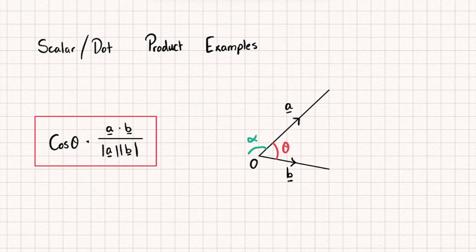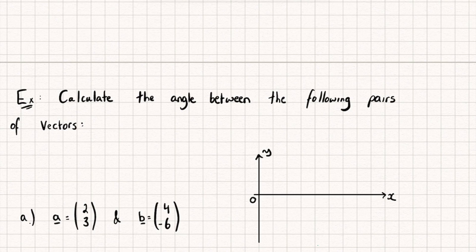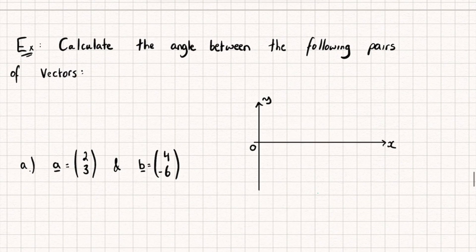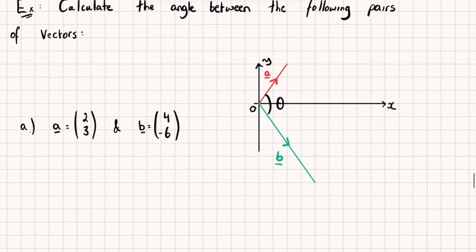Let's take a look at some examples. We have three different examples to look at. The first question says calculate the angle between the following pairs of vectors. We have vector a and b, both in two dimensions. For the first one I'm going to draw it on a diagram. We've got vector a which is (2, 3) and vector b which is (4, -6). You can see they're both pointing away from the origin, so the angle theta is the one between the two.